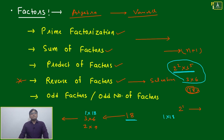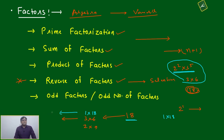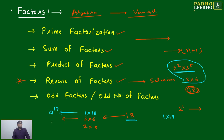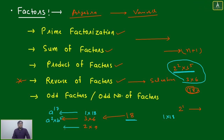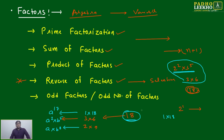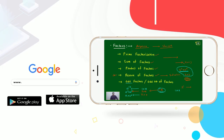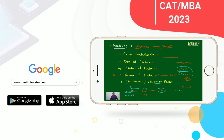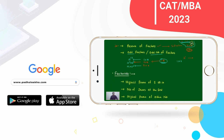So if factors are 18, the possible number representations are: a¹⁷ (from 1 × 18), a² × b⁵ (from 3 × 6), and a × b⁸ (from 2 × 9), where a and b are prime numbers — three possibilities total. You must be careful when reverse factor questions are asked, and many times we get confused between 'odd factors' and 'odd number of factors.' Based on odd number of factors, multiple questions will be asked.